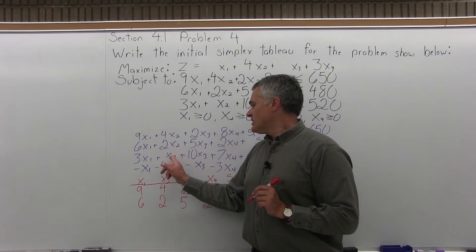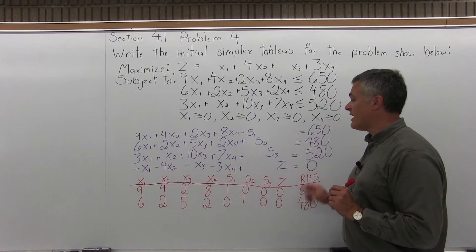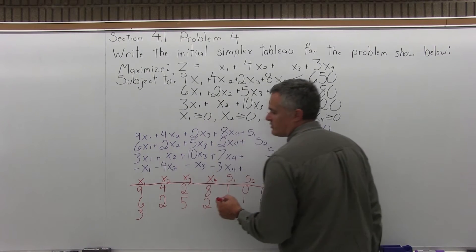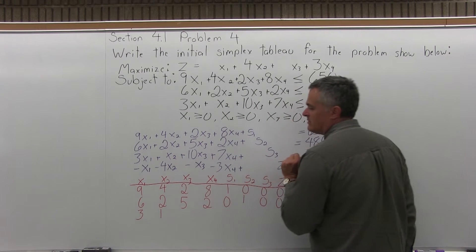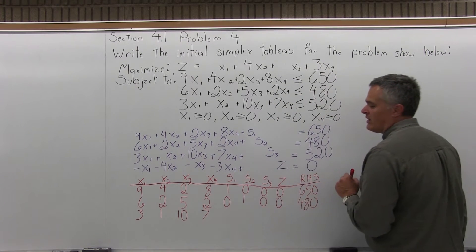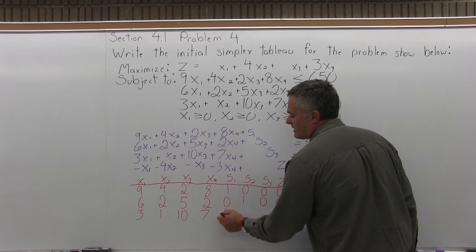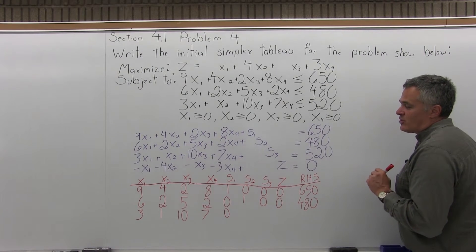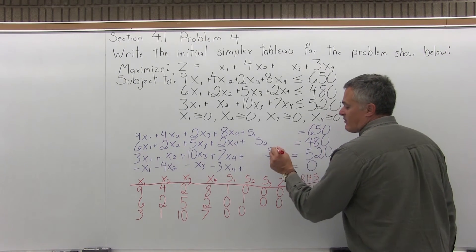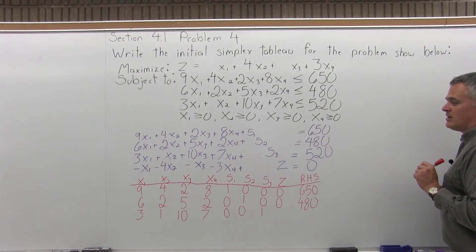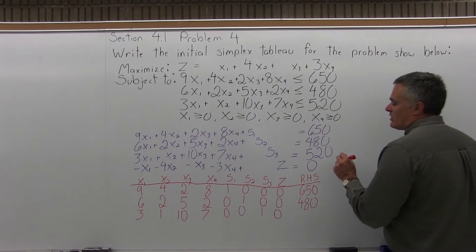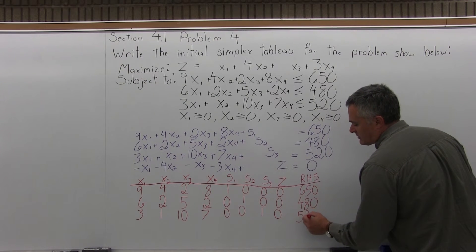The third equation — 3x1 plus x2 plus 10x3 plus 7x4 plus s3 equals 520 — becomes the third row. In the x1 column: 3; x2 column: 1; x3 column: 10; x4 column: 7; s1 column: 0; s2 column: 0; s3 column: 1; z column: 0; and the right-hand side value is 520.